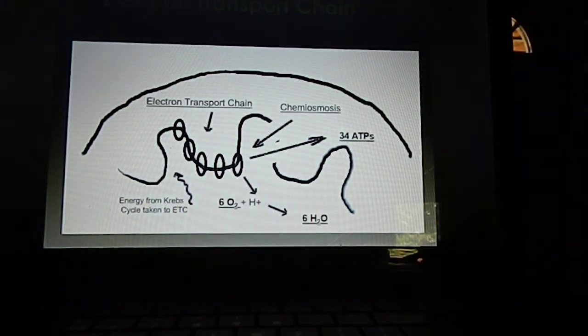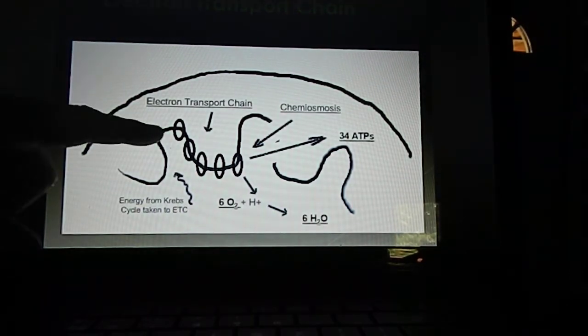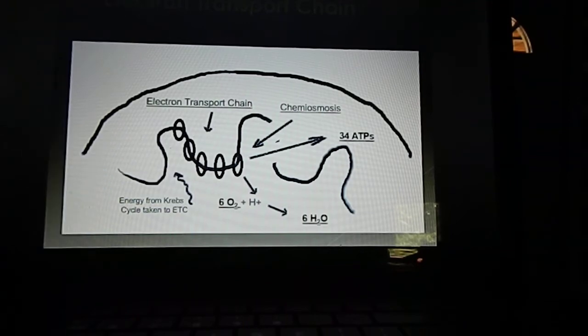Here's a drawing of the electron transport chain. You can see there are different sets of transport proteins within the inner lining of the mitochondrion. When chemiosmosis occurs, hydrogen ions are released inside the mitochondrion, and there's oxygen there. The hydrogen ions and the oxygen rearrange themselves to form water. Through chemiosmosis, 34 ATPs are produced.